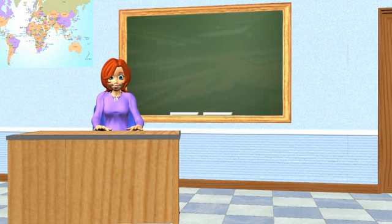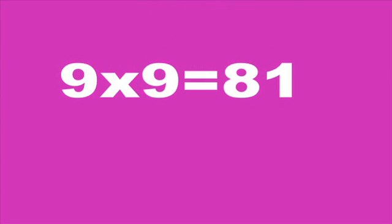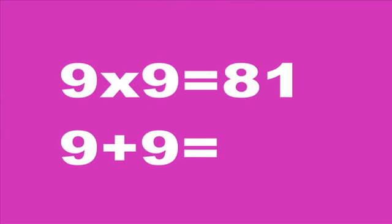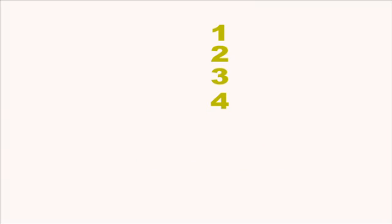Do you notice that the numbers for nine times nine are the same numbers for nine plus nine, only reversed? Nine plus nine is 18. Nine times nine is 81. That helps, too. There's a pattern here. Watch.